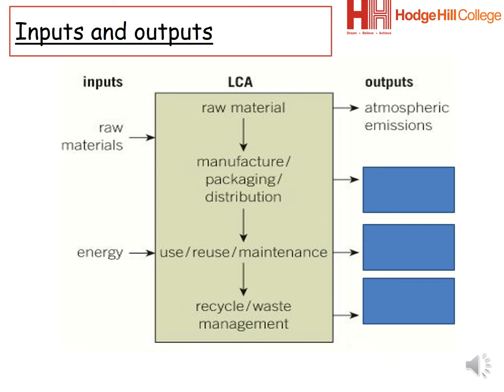One output that must be considered is atmospheric emissions. For example, carbon dioxide emissions — the more CO2, the greater the impact on the earth, as this is a greenhouse gas. Another output is waterborne wastes, where waste materials enter into the oceans, rivers, lakes, etc.